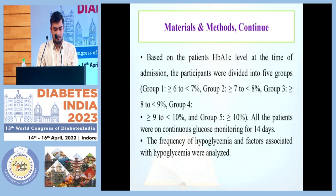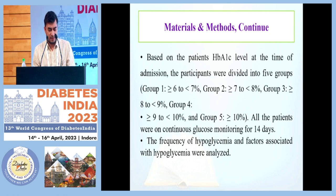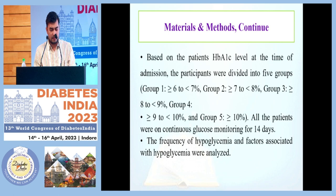Materials and Methods. Based on the patient HbA1C level at the time of admission, participants were divided into five groups: Group A (HbA1C 6–7%), Group B (7–8%), Group 3 (8–9%), Group 4 (9–10%), and Group 5 (more than 10%). All patients were on continuous glucose monitoring for 14 days. The frequency of hypoglycemia and factors associated with hypoglycemia were analyzed.